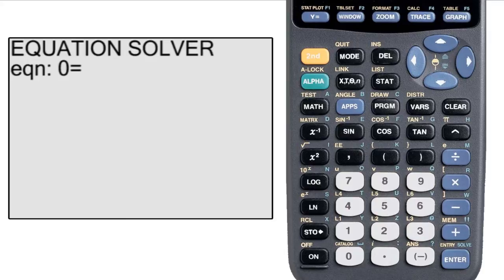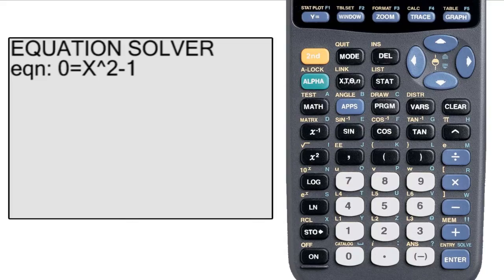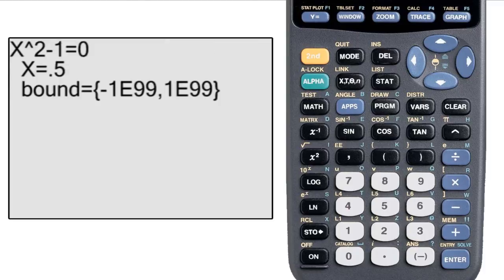It'll then say equation, then zero equals. Before you use this to solve an equation, you need to set the equation equal to zero. I'm going to solve x squared equals one, so I subtract one from both sides to make it x squared minus one equals zero. I plug x squared minus one in and hit enter, and it displays the function equal to zero and says x equals something. But this isn't the answer yet.